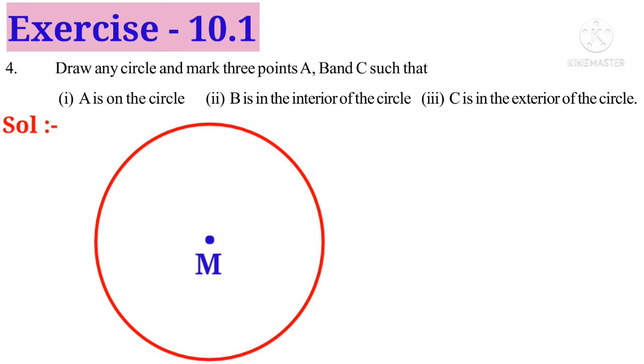Now put the points B interior, means inside of the circle. A is on the circle, so put A on the circumference of the circle. C is exterior, so C is on the outside of the circle.